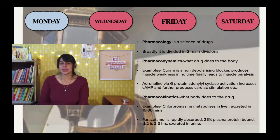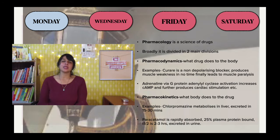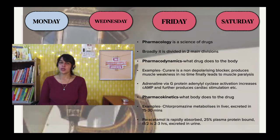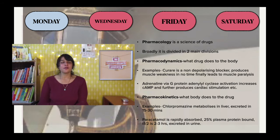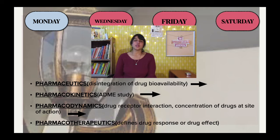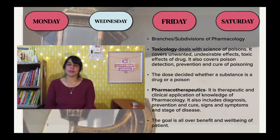That was all I did in the first Monday episode. I also published another episode about the basic broad divisions of pharmacology. Broadly, pharmacology is divided into two main branches: pharmacodynamics and pharmacokinetics. Pharmacodynamics is what the drug does to the body, and pharmacokinetics is what the body does to the drug. That is the one-line description — for more details, you have to listen to the podcast.